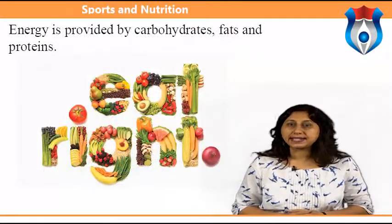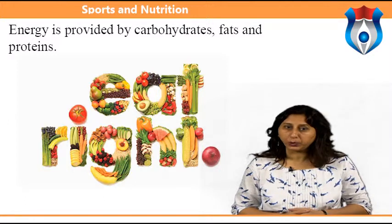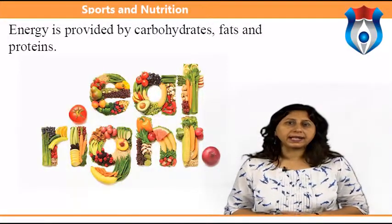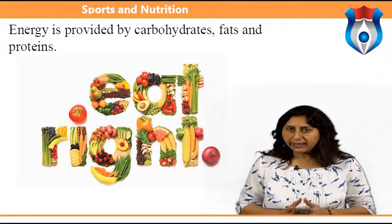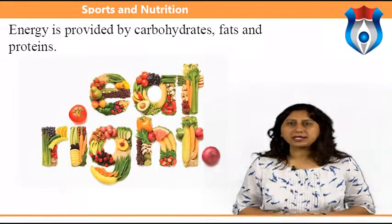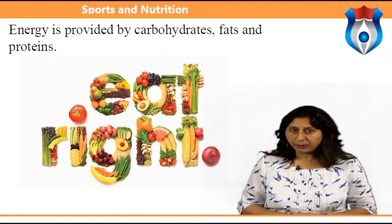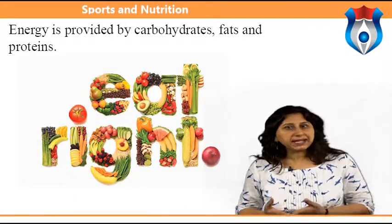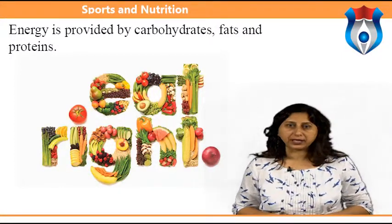An adequate diet provides sufficient energy for the performance of metabolic work, although the energy in food is in an unspecified form. A balanced diet provides all dietary requirements in the correct proportions. Ideally this would be 1/7 fat, 1/7 protein, and 5/7 carbohydrate.